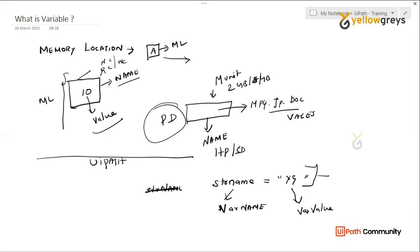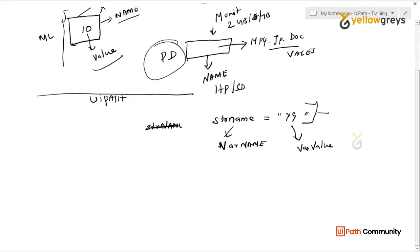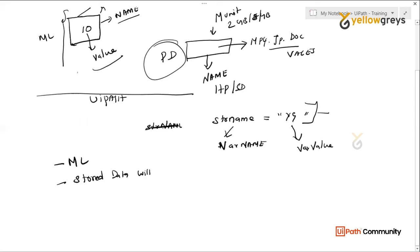If you want to store digits, you store them in the same kind of memory unit. So if you look at the memory location, you store a variable there. The data stored within a variable is called a value. Let's recap: a memory location is a variable. If you store data within a variable, that data is the value.